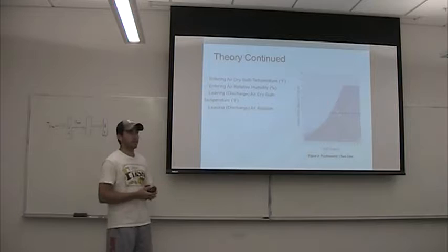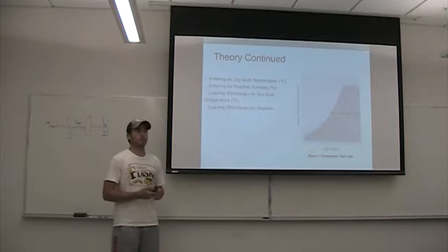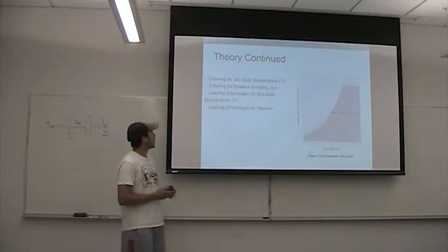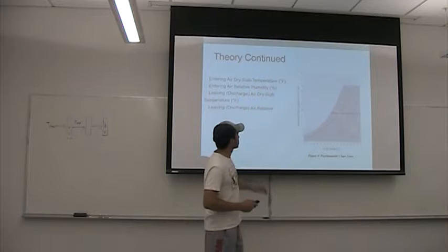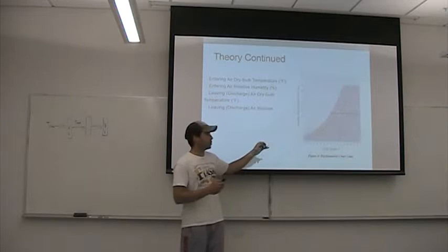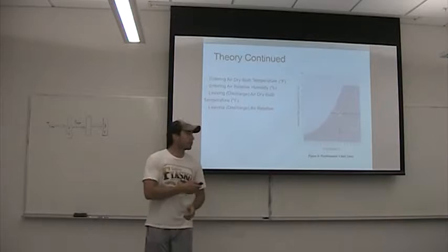What we're going to be finding in this experiment is the air dry bulb temperature, which is just the temperature without moisture or humidity. And then the relative humidity, we'll find that. We're going to find the leaving temperature and the relative leaving temperature. So this chart over here, the psychrometric chart, basically plots all of this: your dew point, your relative humidity. When the relative humidity is equal to 100%, all of your wet bulb, your dry bulb, and your dew point are equal to each other.